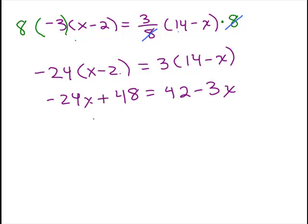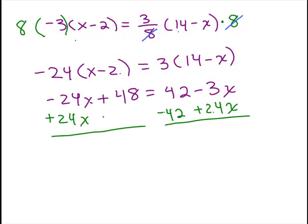Now it doesn't matter which side of the equation you put the x's on but I like to put it on the side that's positive, just I make less mistakes when I don't have a lot of negative numbers. So I'm going to add 24x to both sides so that I'm going to have my variable on the right hand side so I want to subtract 42 from both sides. So that gives me, let's see, on this side 48 minus 42 is, I'm sorry, is 6.